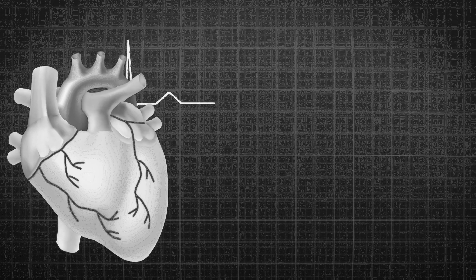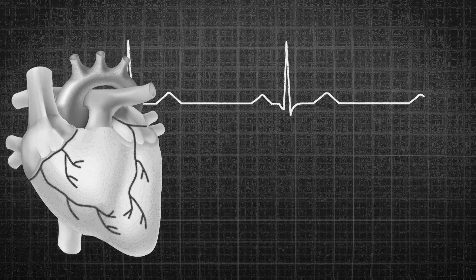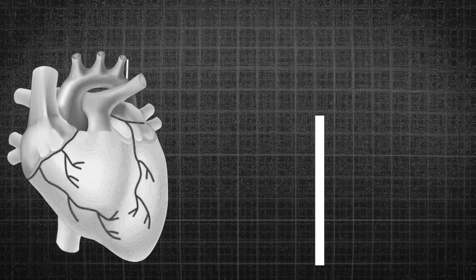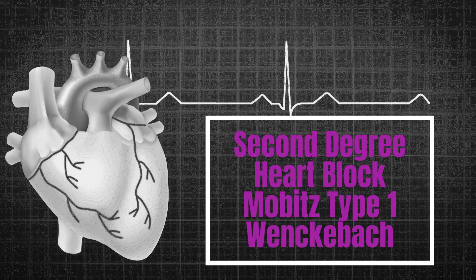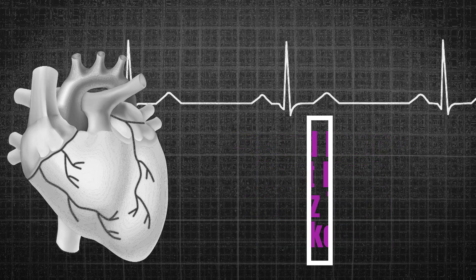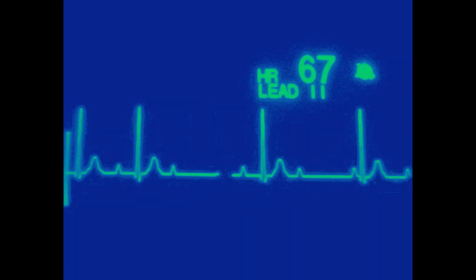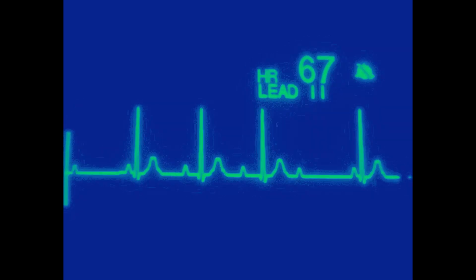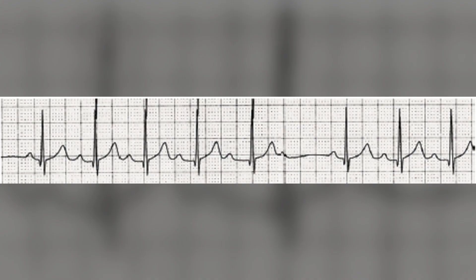Hello everyone and welcome back to our channel. In this video, we're going to discuss 2nd degree heart block type 1, also known as Mobitz type 1, or Wenckebach. This is a common condition that affects the heart's electrical conduction system, leading to an irregular heartbeat. In this video, we'll be analyzing EKG recordings to help you better understand this condition.